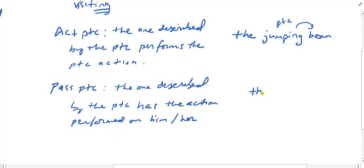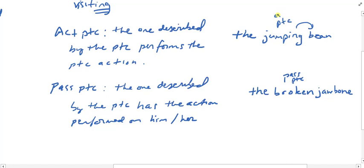On the other hand, 'the broken jawbone' — 'broken' is a passive participle modifying 'jawbone.' Is the jawbone breaking anything? No. Rather, someone has broken the jawbone; someone has acted upon it such that it is in a broken condition. So with passive participles, whatever they're describing has the action of the participle performed on it. That's the key difference between active and passive participles.